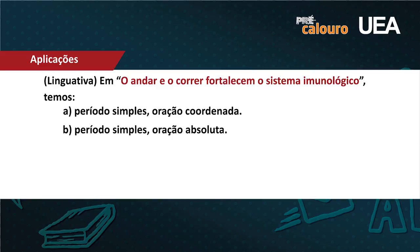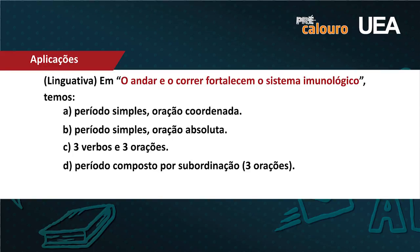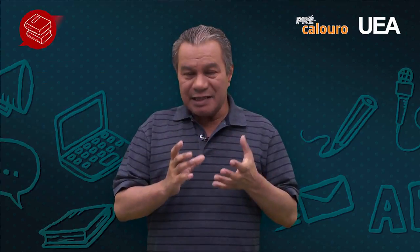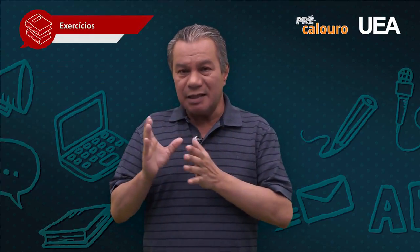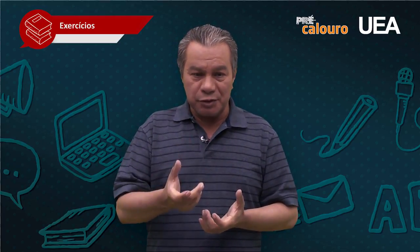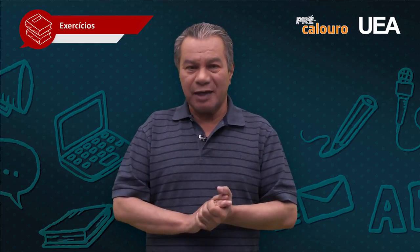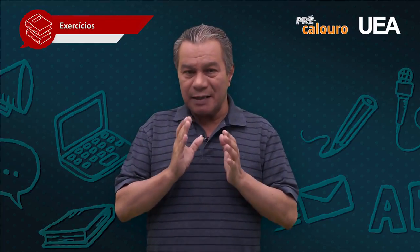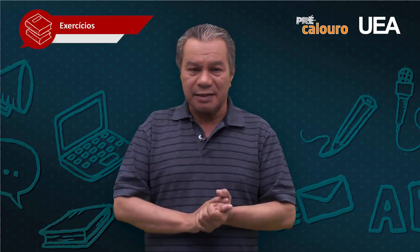A letra C propõe três verbos e três orações — bem tentadora para quem não percebe o fenômeno da derivação imprópria. A letra D: período composto por subordinação, três orações — mais uma proposta tentadora. A letra E: dois verbos e duas orações. É essa segurança que eu quero passar para você: diante de uma proposta, não confundir verbo com substantivo. Quer fazer um reforço? Vamos fazer aquela leitura morfossintática?